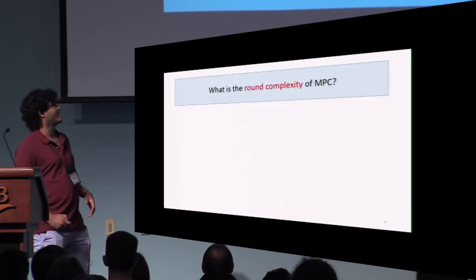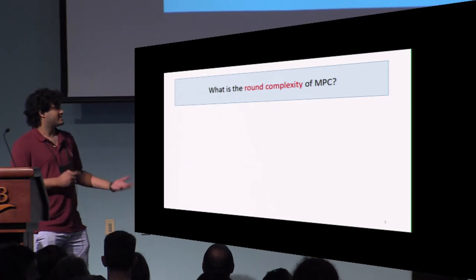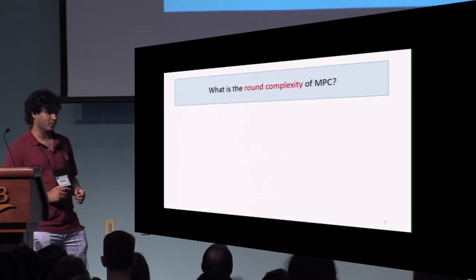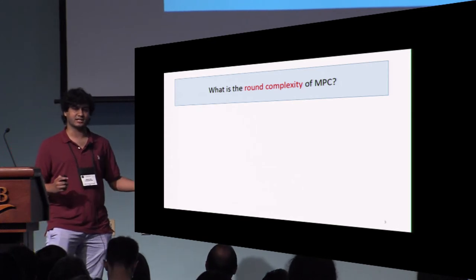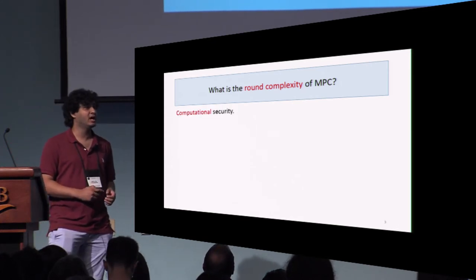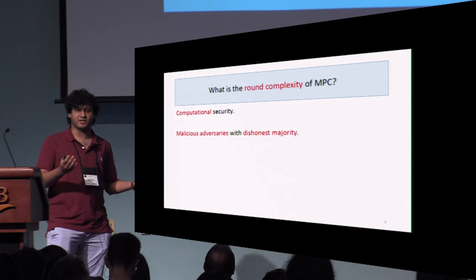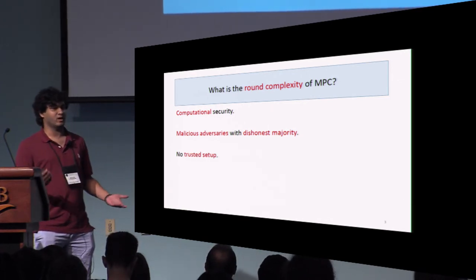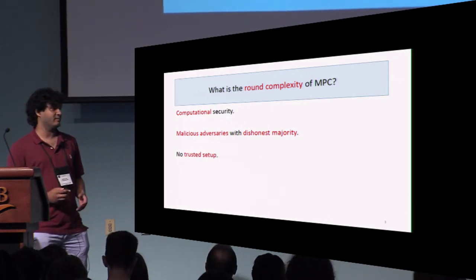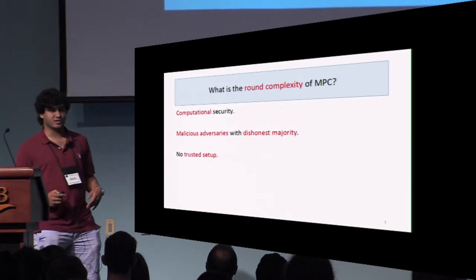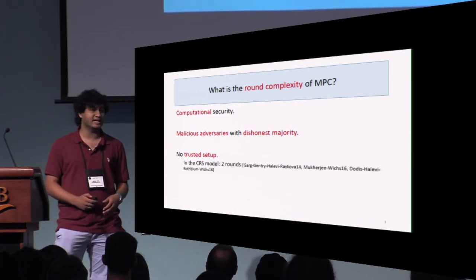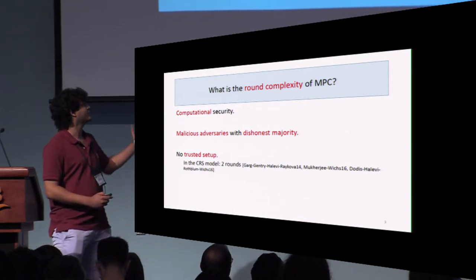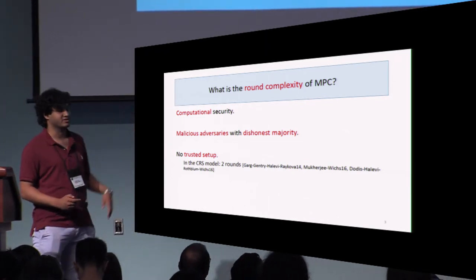We're interested in computational security. We allow a malicious adversary to corrupt an arbitrary set of parties, and we work in the plain model. Specifically, if we assume a trusted setup like CRS, then this problem has already been resolved and we know of two-round protocols.